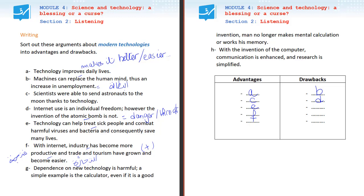G: 'Dependence on new technology is harmful. A simple example is the calculator. Even if it is a good invention, man no longer makes mental calculations or works his memory.' So when you say dependence, it's also, in a certain way, addiction. You could be addicted to your mobile phone, to the internet, to computer games. And addiction is always negative, so we put it under drawbacks.